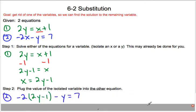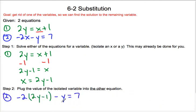So equation 2, we have negative 2 right here, and then the x value is being replaced with the value of x. Negative 2x minus y equals 7.